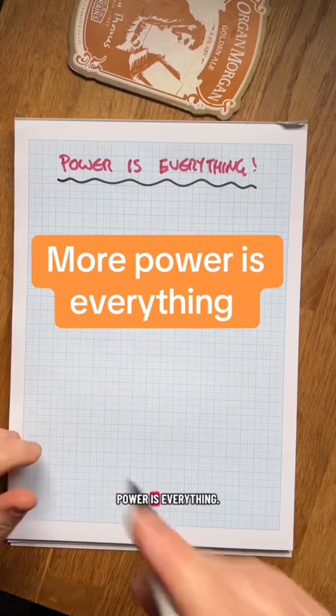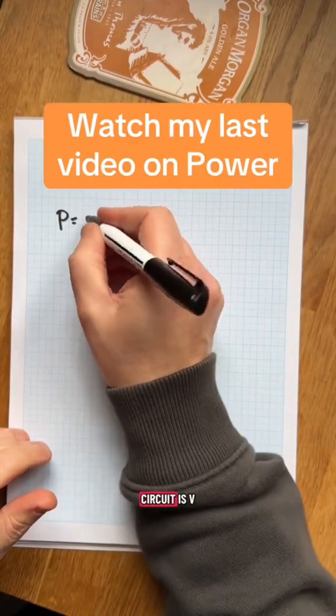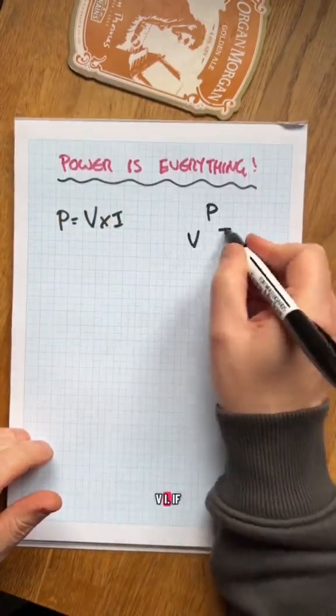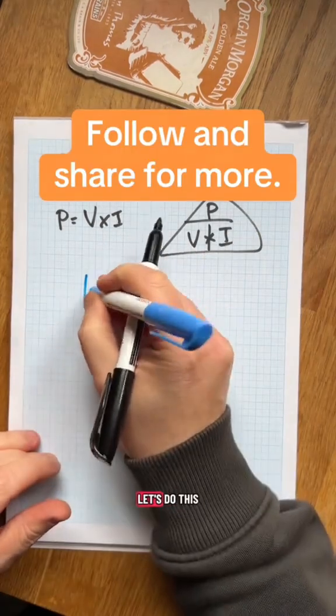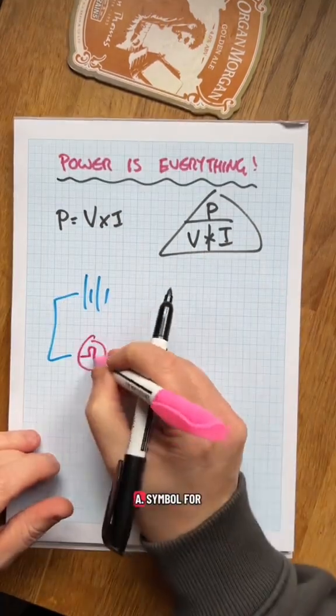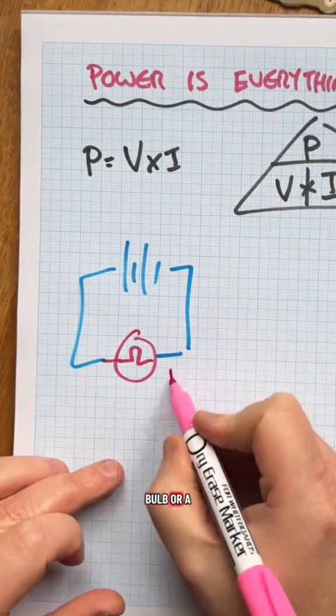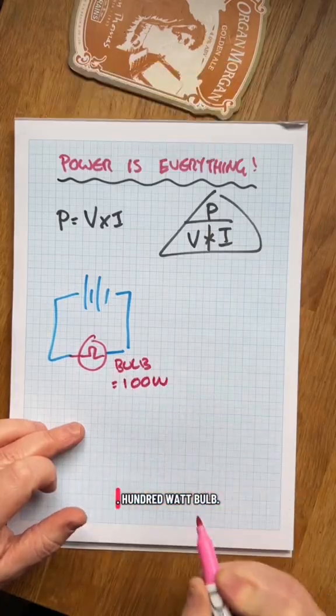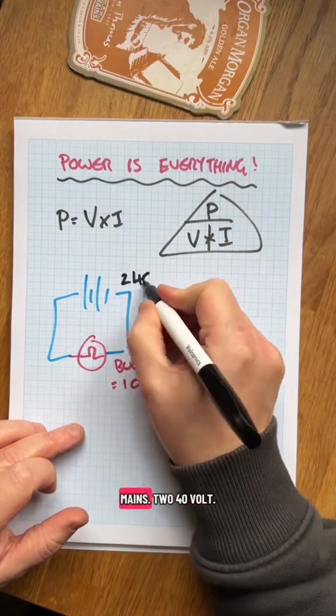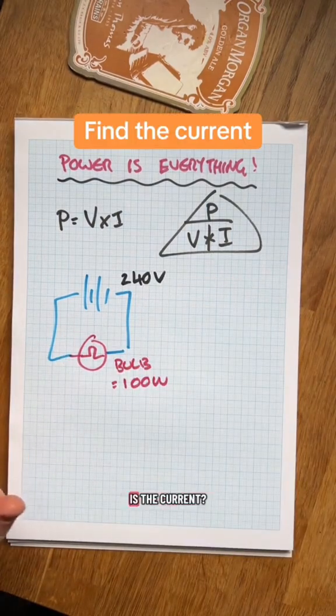Power is everything. We know from the last video power in a circuit is V times I. Let's do this little battery circuit. We've got a lamp, a bulb. Let's say we've got a 100 watt bulb. It plugs into the mains at 240 volts. What is the current?